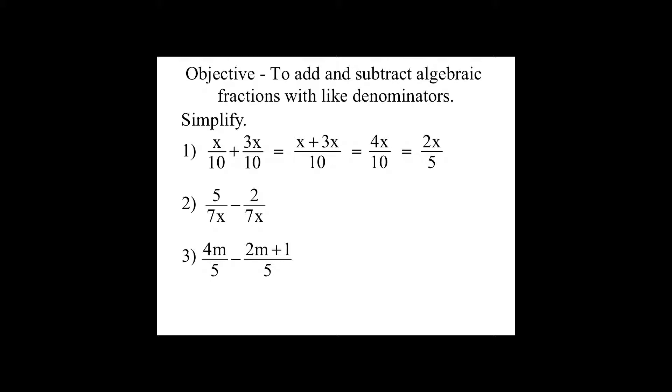Now check your work. You should have 5 minus 2 all over 7x. 5 minus 2 is 3, and 3 over 7x cannot be simplified.